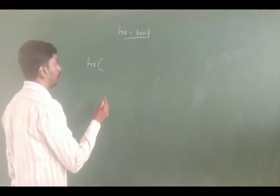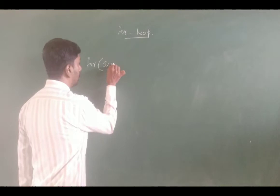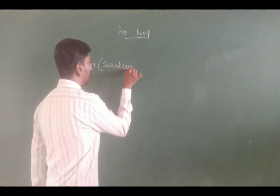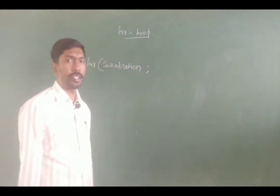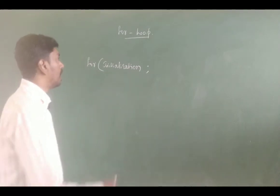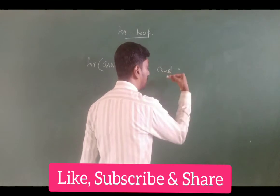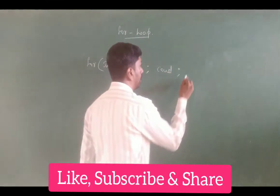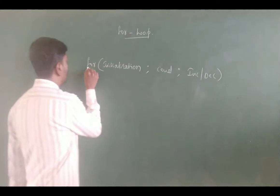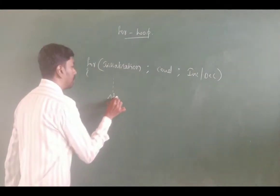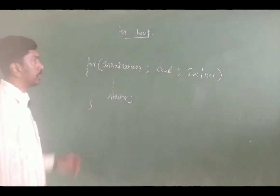The for loop has three different portions or parts. The first is called the initialization part, followed by a semicolon. The second is the condition, followed by a semicolon. The third is the increment or decrement. Within the block we can mention some statements. This is called the block.